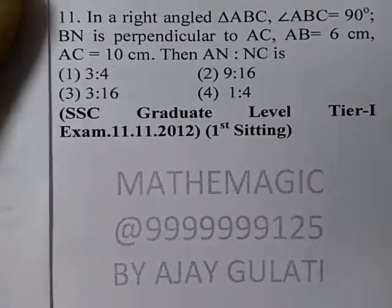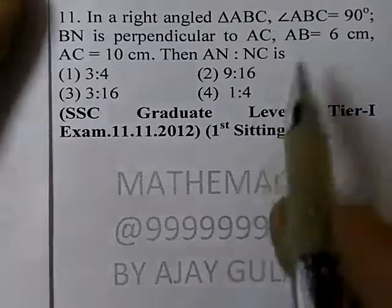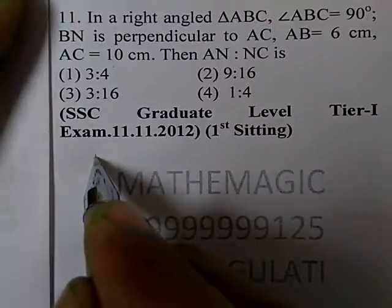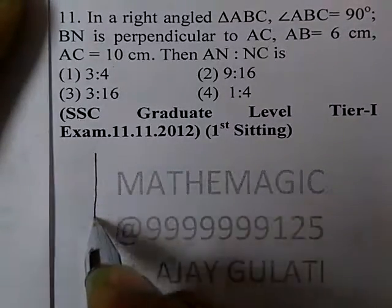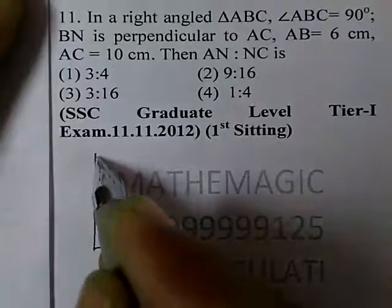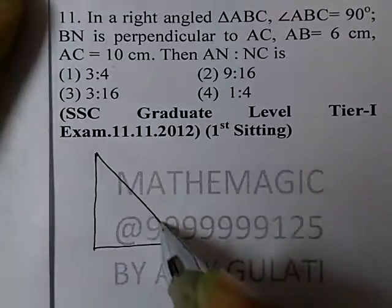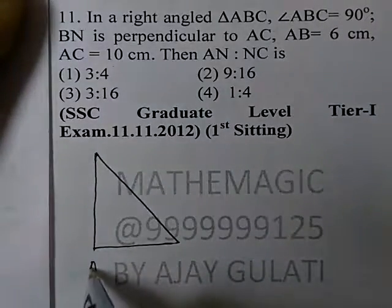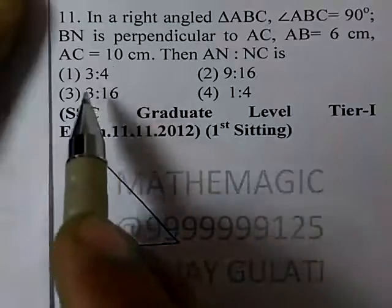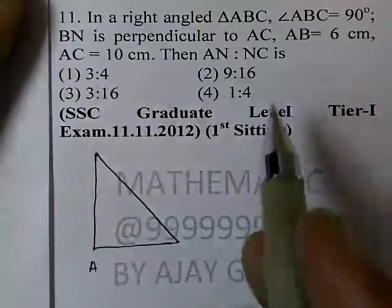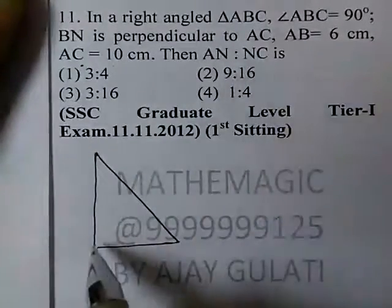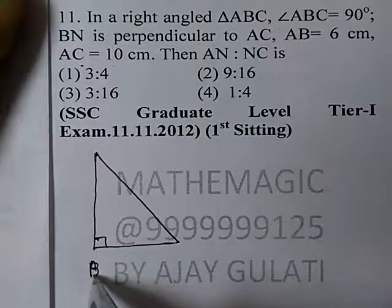In a right-angle triangle ABC, angle ABC is equal to 90 degrees and BN is perpendicular to AC. AB is equal to 6 cm, AC is equal to 10 cm. Then what is AN ratio NC? AB is 6 and angle B is 90 degrees.